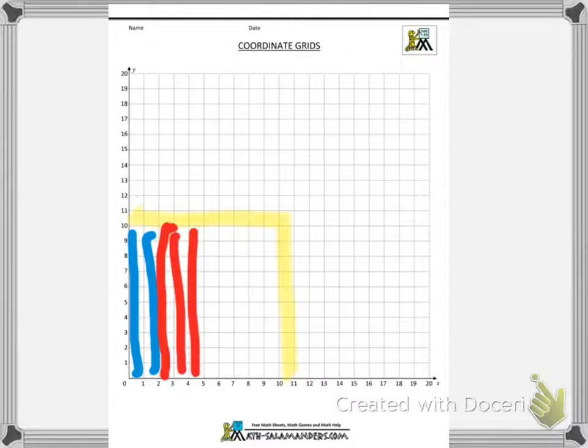10, 20, 30, 40. So we wrote an addition problem. Remember that each of those little tiny squares on the coordinate grid is one hundredth. Ten of them together is one tenth.